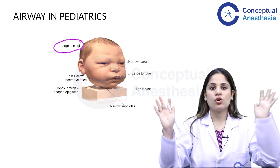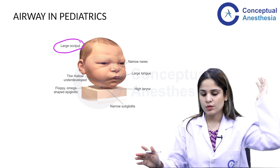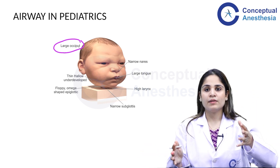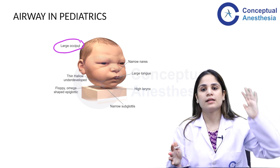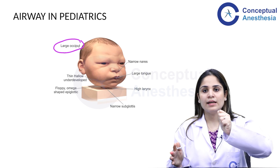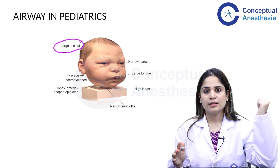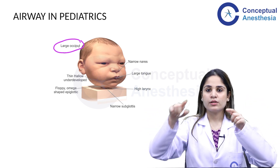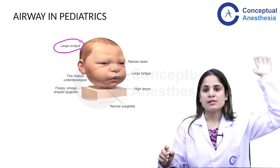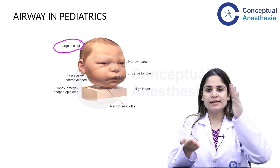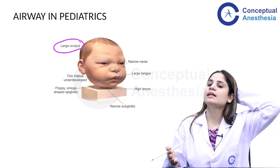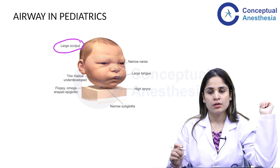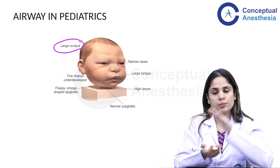First, children have a large occiput — the posterior part of the head. Because of this, the head does not remain stable. When giving the sniffing-the-morning-air position in adults, the head stays stable, but in children the head keeps wobbling, making intubation difficult. To address this, place an appropriately sized gel ring or head ring below the patient's head, or two folded bedsheets, to give a good sniffing position and keep the head stable on the table.